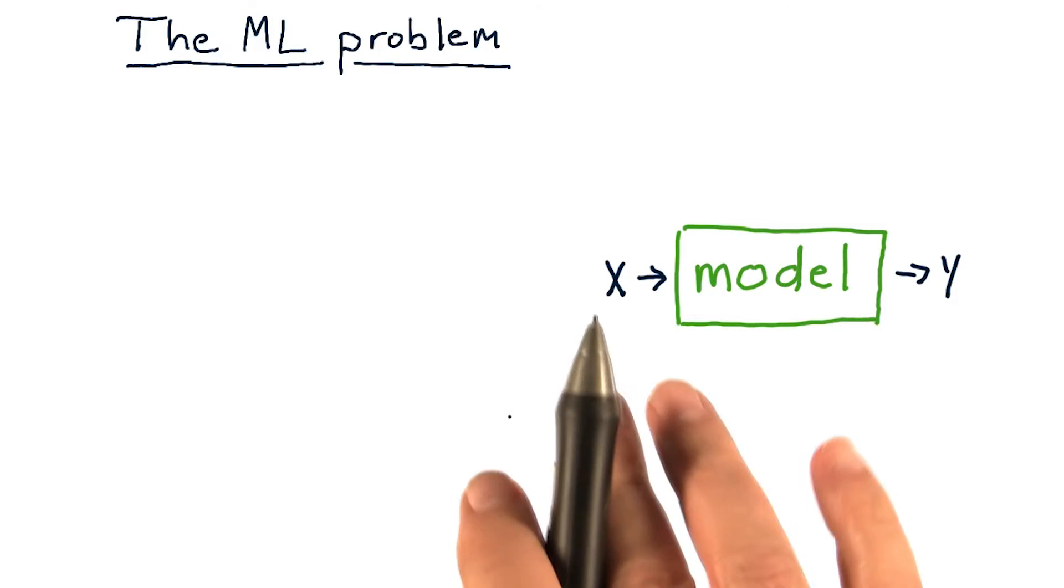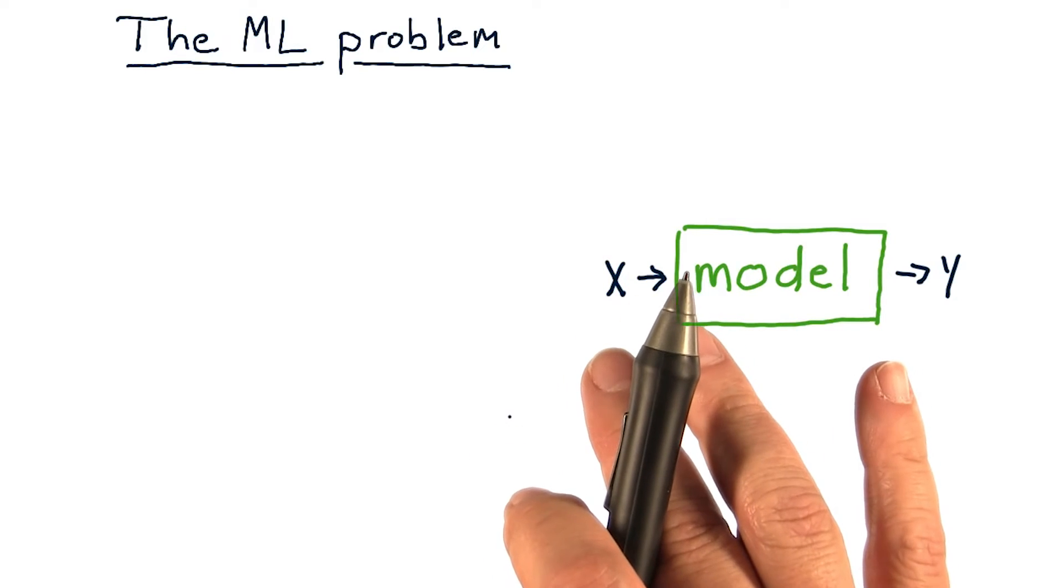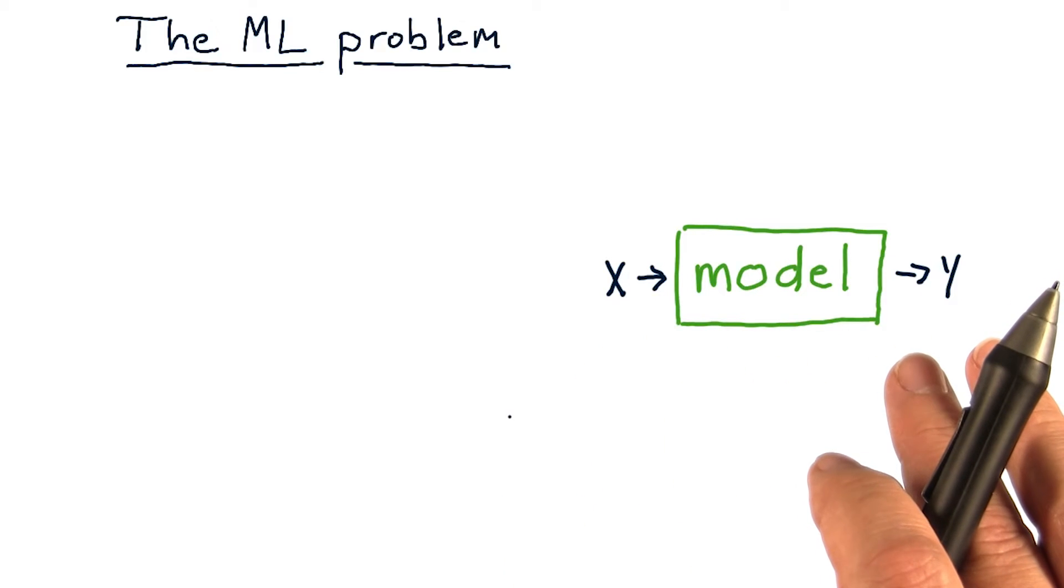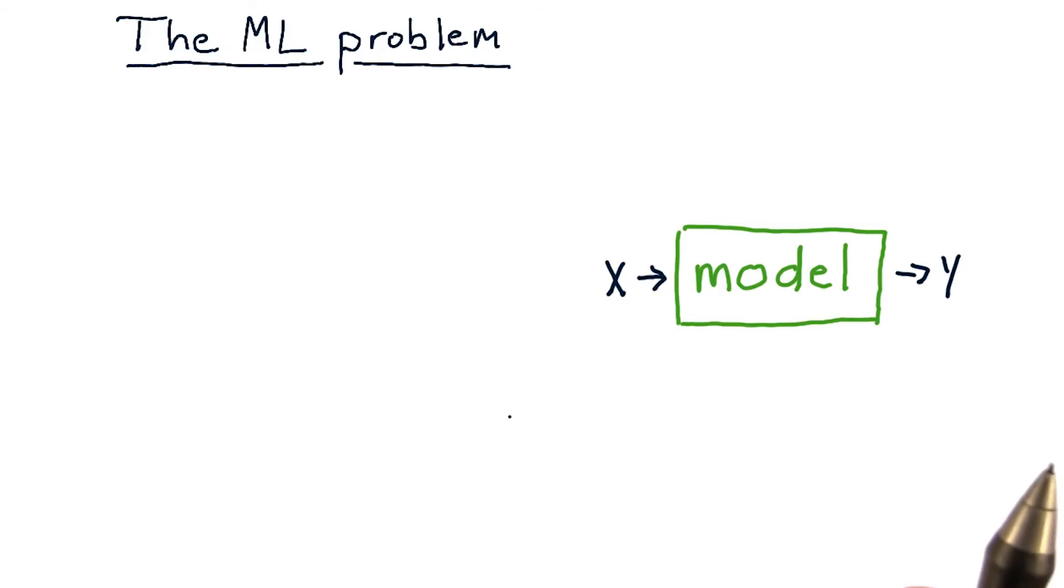Examples might be, for us, x are some features of stocks, and y is a future price. There are many other uses of machine learning models, that's just one of them.